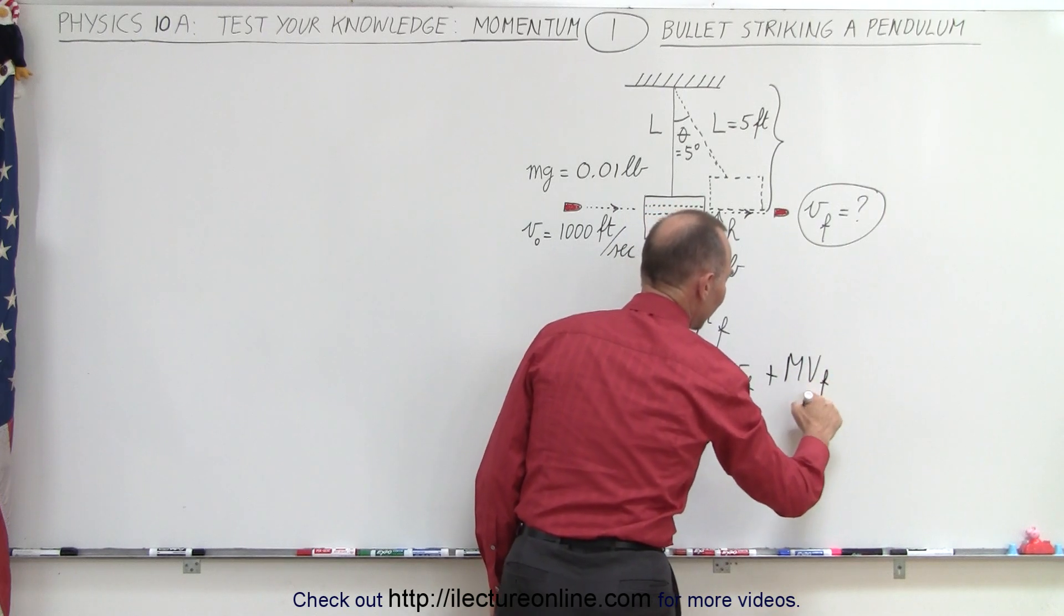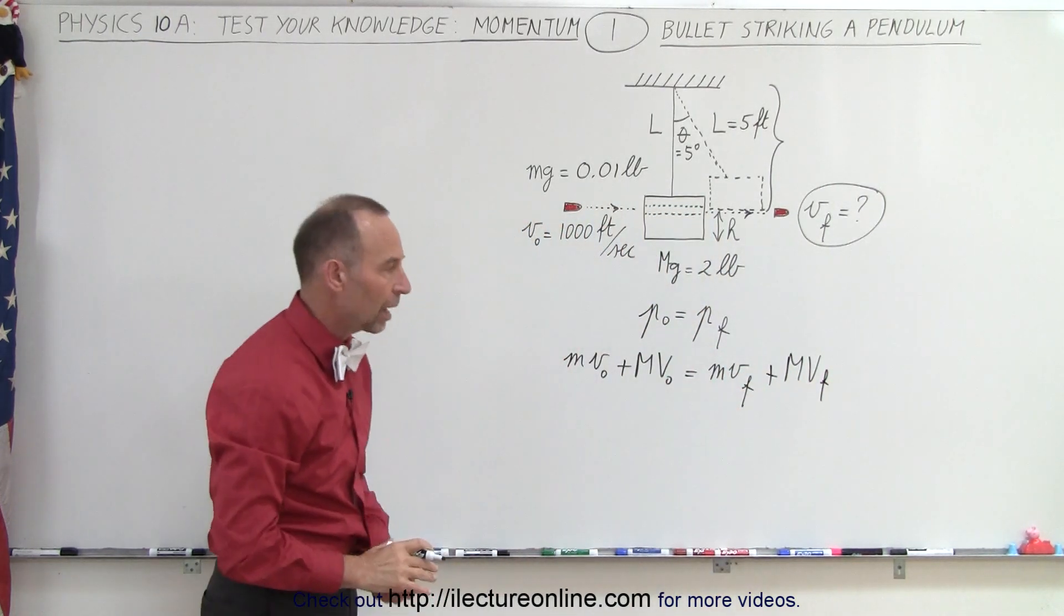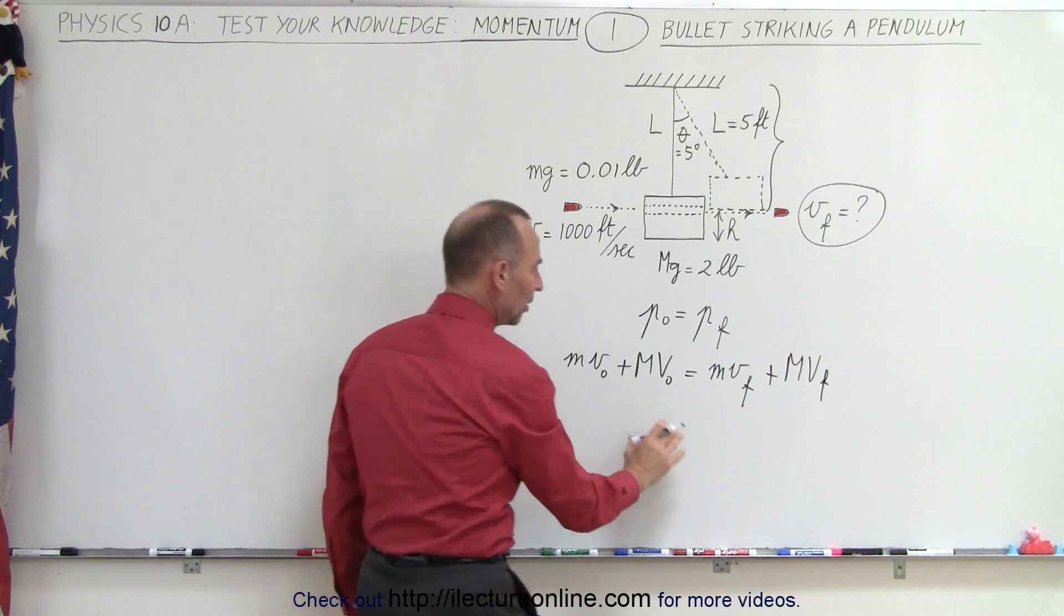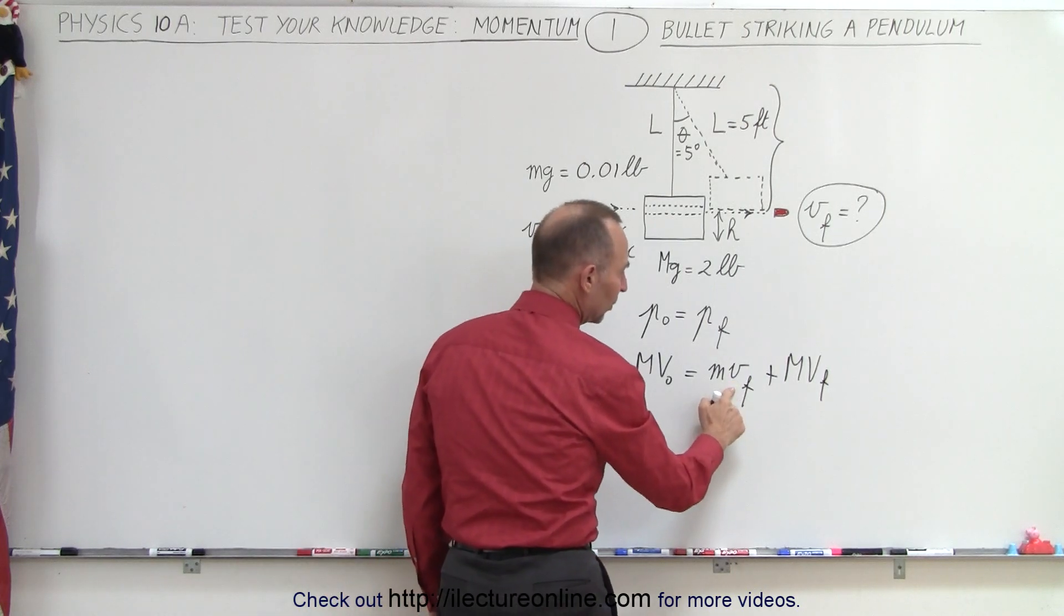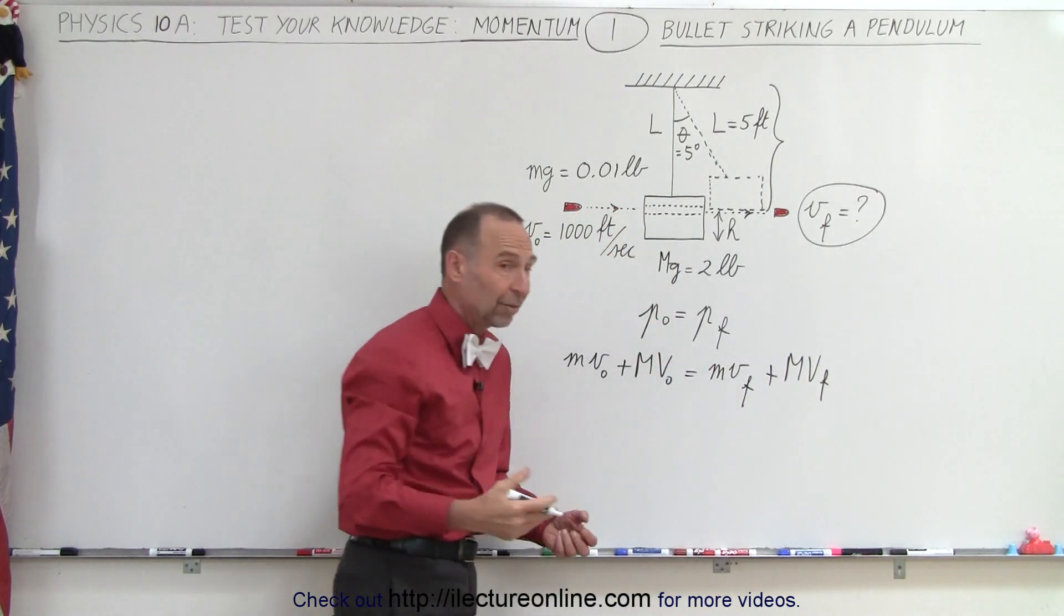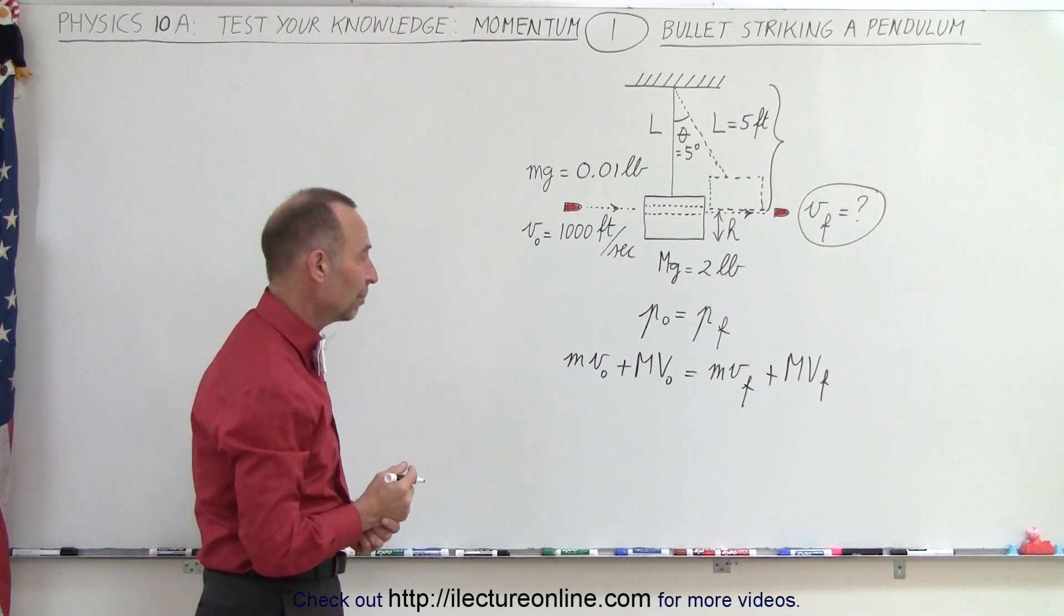V final is the final velocity of the block. Realize that in this equation we have two unknowns: v final of the bullet and v final of the block, and that's why a single equation cannot solve that problem.